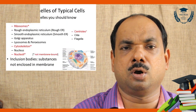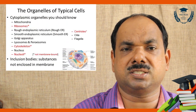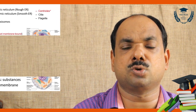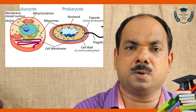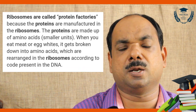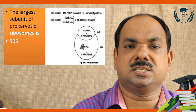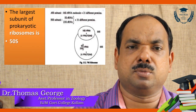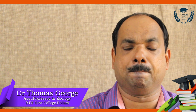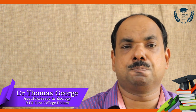Membrane-less organelles are ribosomes, inclusion bodies, nucleolus, and centrosome. Ribosomes are common to both prokaryotes and eukaryotes and are called protein factories. The largest subunit of the prokaryotic ribosome is 50S. When ribosomes are studded on the endoplasmic reticulum, it is called rough endoplasmic reticulum, which helps in protein synthesis.